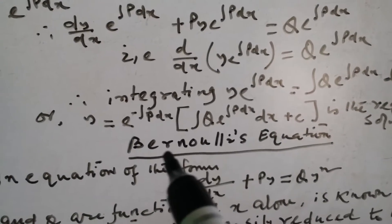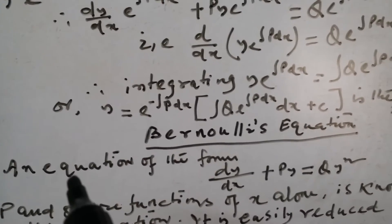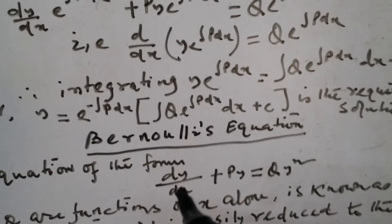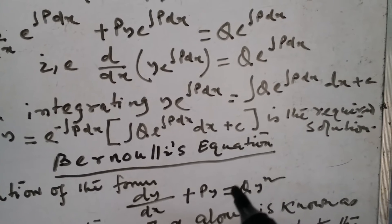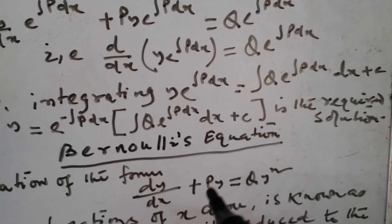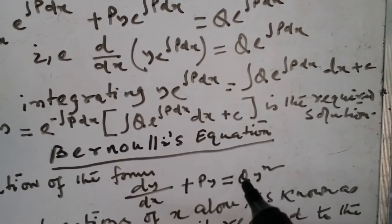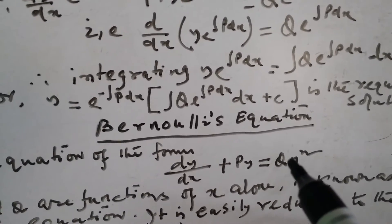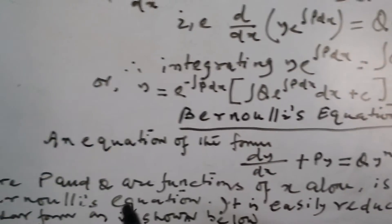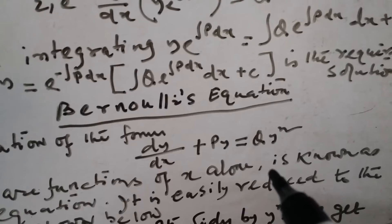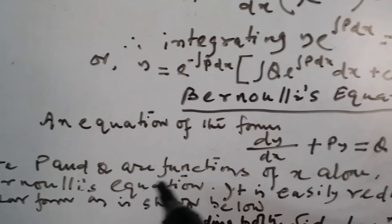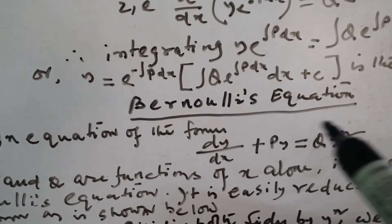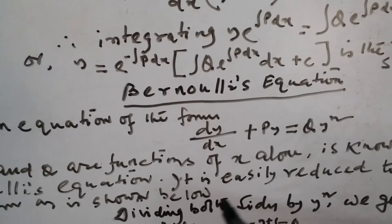Now, Bernoulli's equation. What is the Bernoulli's equation? If the equation is of the form dy/dx plus py equals q times y to the power n, where p and q are functions of x alone, it is known as Bernoulli's equation.